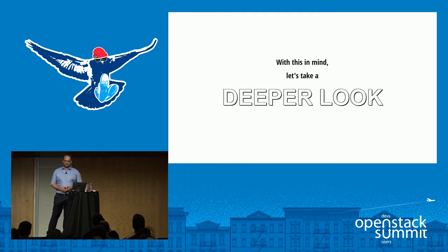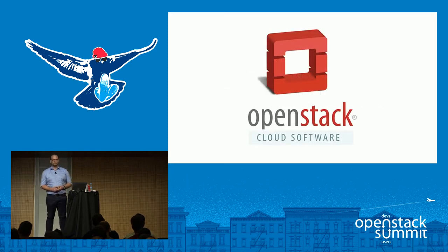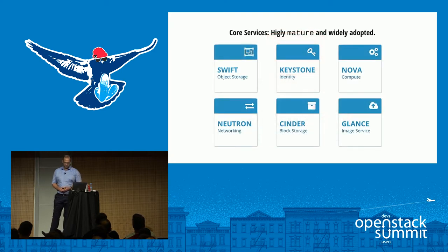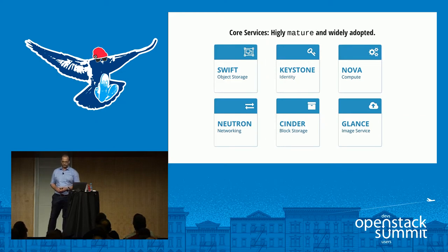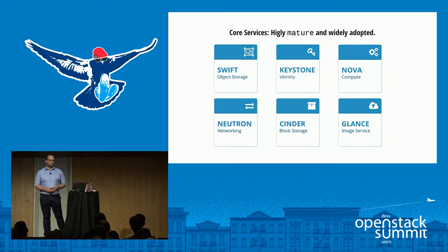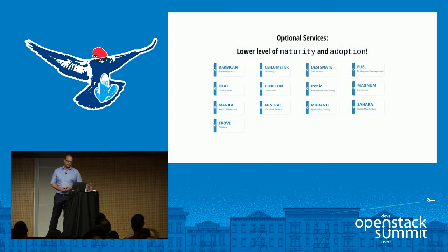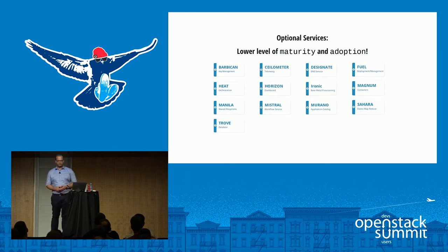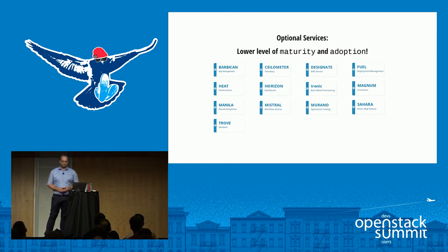With that in mind, let's take a deeper look at the components — first, OpenStack. We have six core projects, core services which are really mature and widely adopted in many environments: Swift, Keystone, Nova, Neutron, Glance — you all know them. Besides that, there are some optional services which are not fully mature, not considered core services, and not as widely adopted. This list is short simply because these are projects that are supported by the distributions I checked.